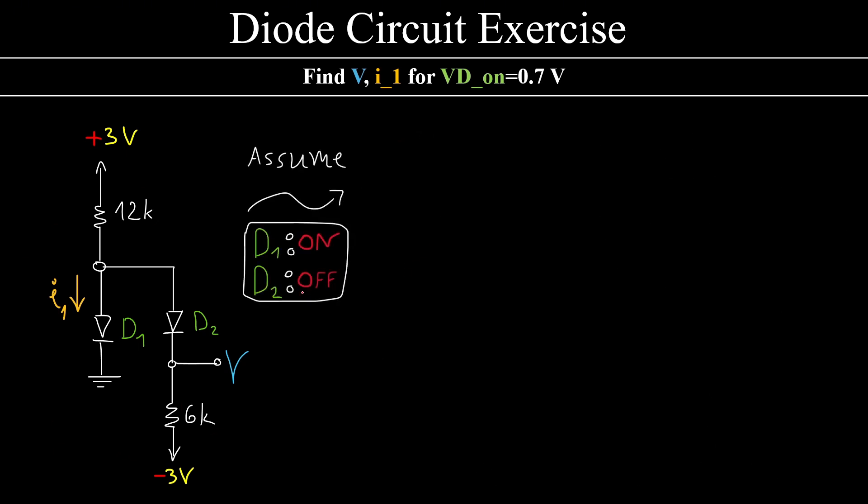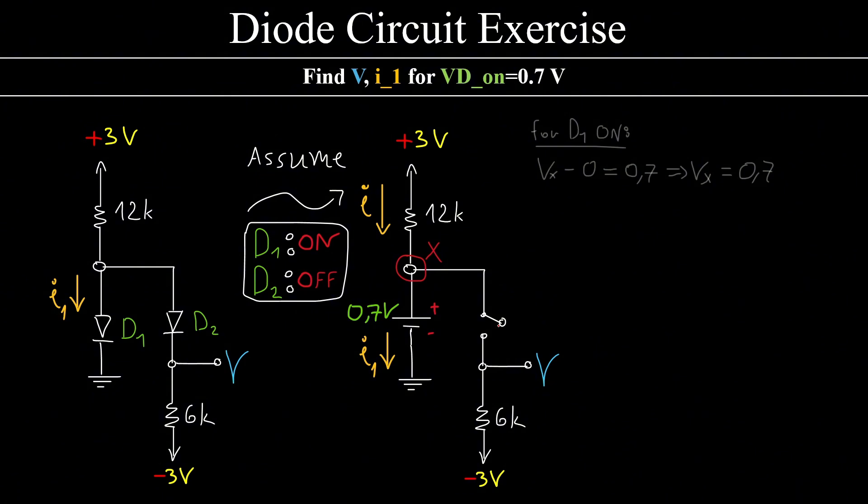It's okay, I'm going to make a different assumption. I'm going to say, what if D1 is on and D2 is off? Well, if a diode is off, it can be represented by an open circuit. If D1 is on, it means that Vx minus 0 must equal 0.7V, which means Vx must be 0.7V. If D2 is off, it means that Vx minus V must be less than 0.7V.